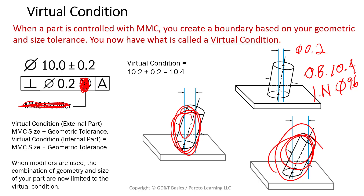To answer the original question: we are not using virtual condition when it's at RFS, but we are calculating inner boundaries and outer boundaries, and the formulas look like the same thing. They intermingle — inner boundaries pull values from both LMC and MMC virtual condition and look identical, same for outer boundaries. The difference really comes down to grammar and terminology. When we get to MMC virtual condition, we use those values for functional gauges — we'll cover that in a future video question line. Thanks for watching, and have a good day!